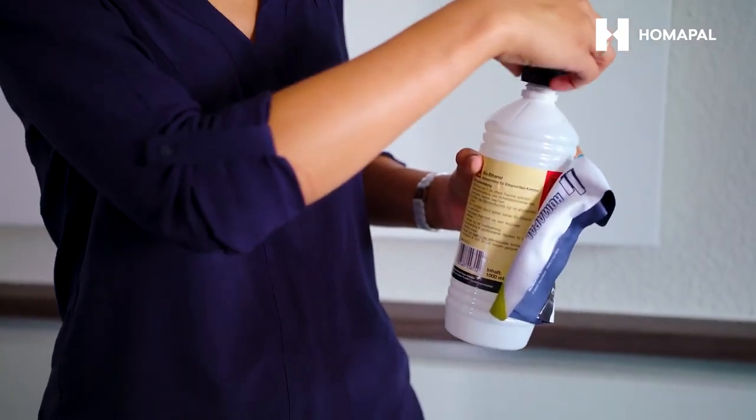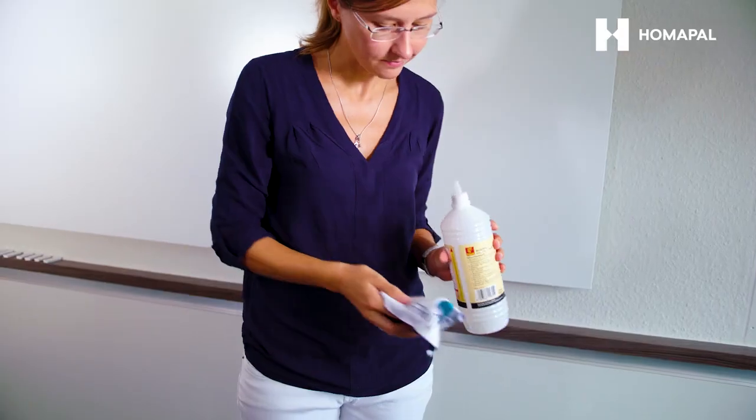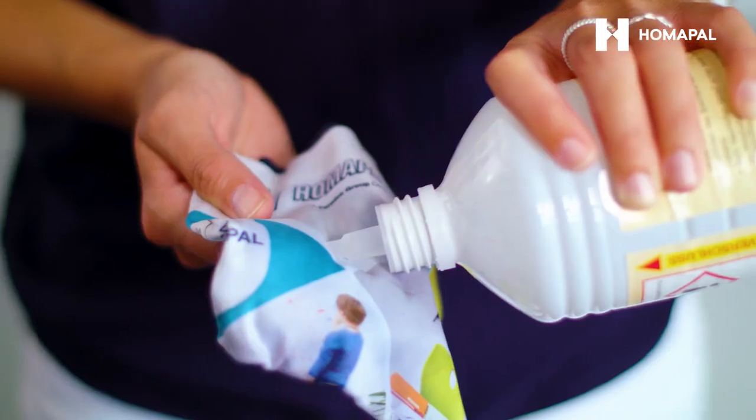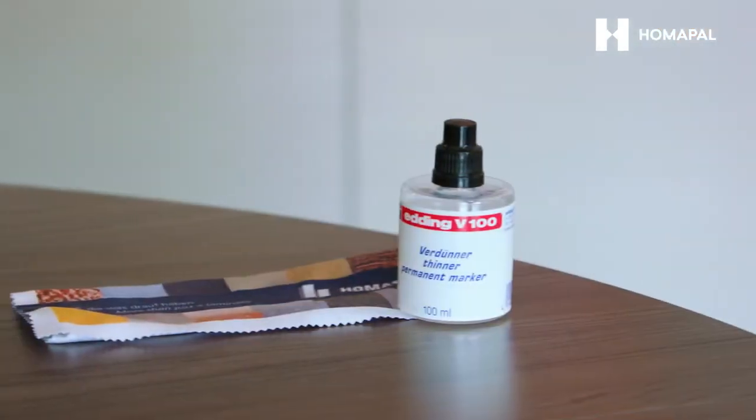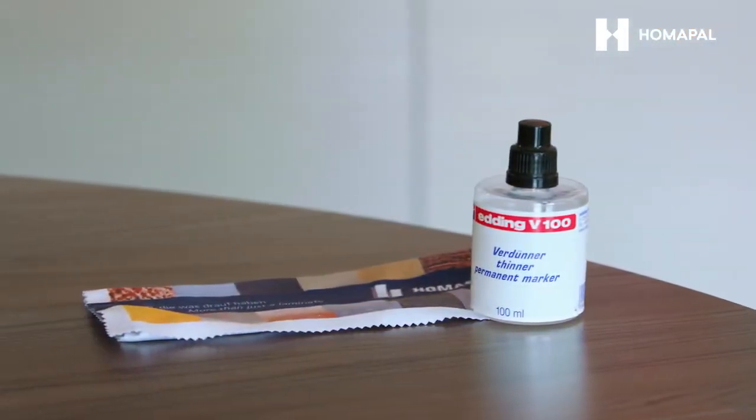For this thorough basic cleaning, a spirit or alcohol-based solvent like ethyl alcohol can be used. We also recommend the thinner V100 from Edding.